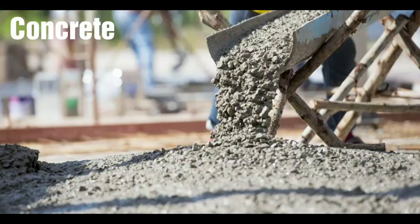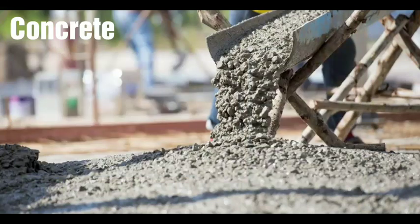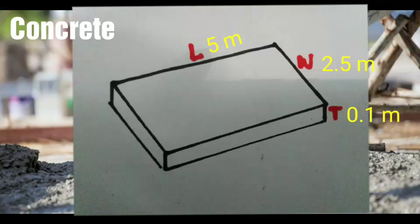Dimensions are presented like this. On the left side is a slab and on the right side is a column. For example, we need to make a slab structure and the measurements are: length 5 meters, width 2.5 meters, and thickness 0.1 meter, equivalent to 4 inches.